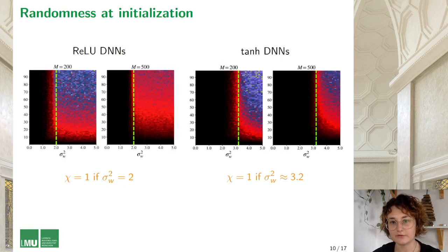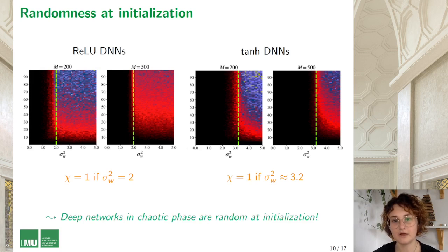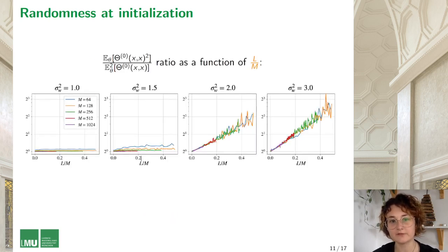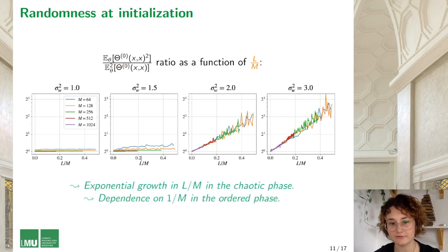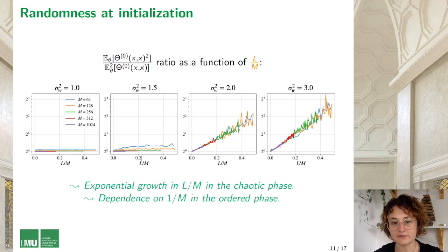Looking at graphs for ReLU and sigmoid networks, the boundary given by chi equals 1 is located at different values of sigma_W for each activation. However, for both activations, the boundary between random and deterministic NTK is still close to the boundary between vanishing and exploding gradients. So we conclude that deep networks in the chaotic phase have a random NTK at initialization. We also examine the dependence of NTK randomness on the depth-to-width ratio L divided by M. In the chaotic phase, we see exponential growth of NTK randomness in the depth-to-width ratio. However, in the ordered phase, the randomness depends rather on 1 divided by M, which is in agreement with NTK theory.